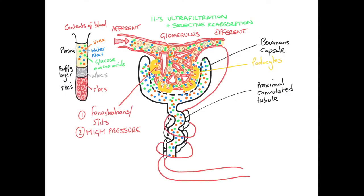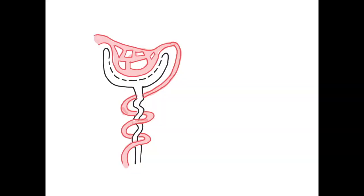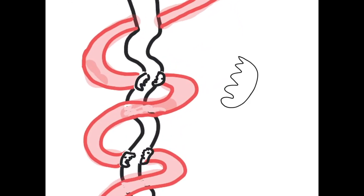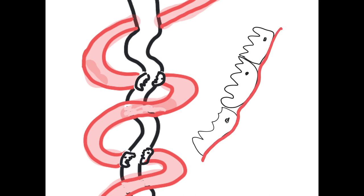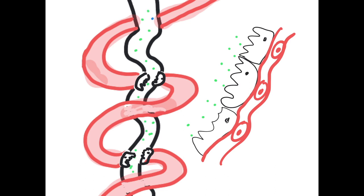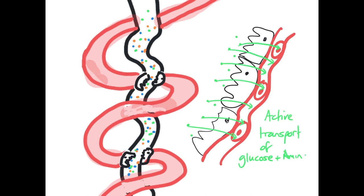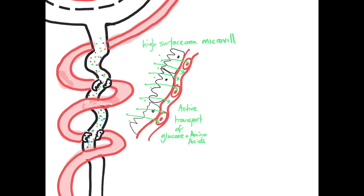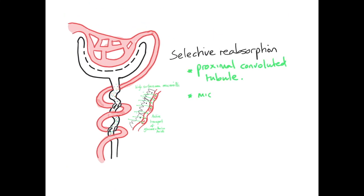All of that good stuff has to be reabsorbed into the blood capillary, and that's done through active transport. Some detail about selective reabsorption: in the proximal convoluted tubule you have cells with microvilli, and whenever you get a wiggly surface it's all about increasing surface area. That's because their role is to selectively reabsorb the glucose and the amino acids. So the high surface area created by the microvilli allows for more glucose and amino acids to be reabsorbed by active transport.